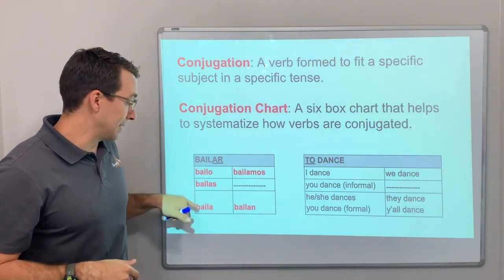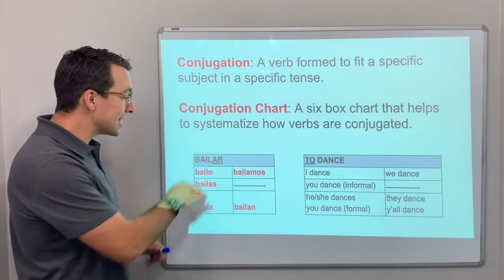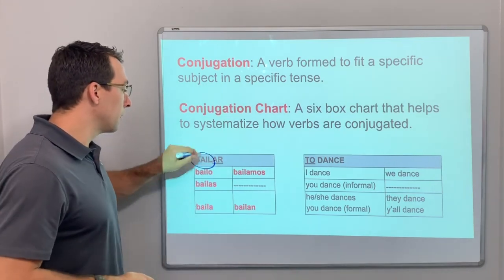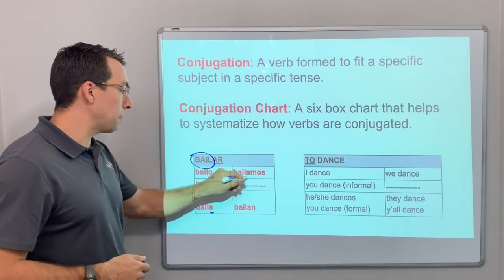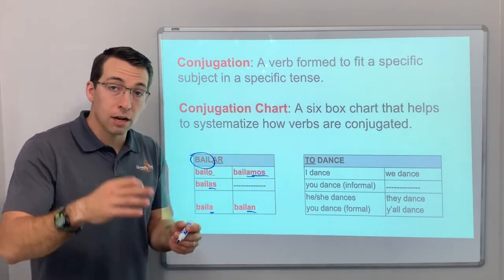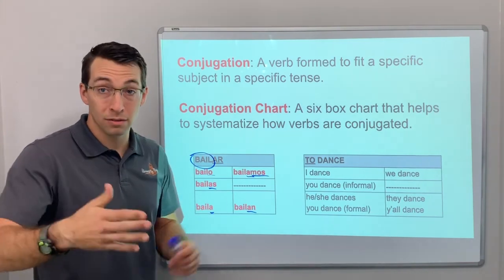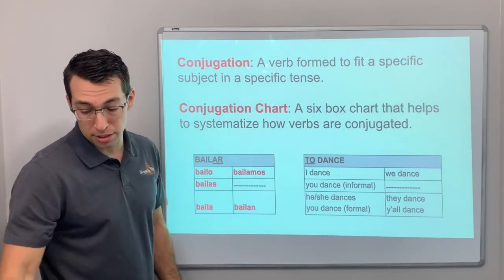Bailo, bailas, baila, bailamos, bailan. Look at this, it's the same root, bail, and then you change the endings in Spanish. That's how you conjugate verbs. You take off the ar ending and then you replace it with the pattern. So these are conjugations.